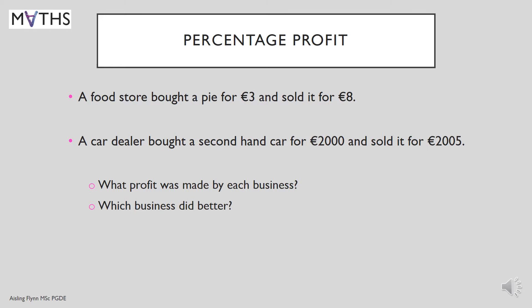I think you'd agree that the food store did better. Why? Because the profit is a bigger proportion in proportion to the cost price — €3. They made €5 on three, that's really good. Whereas to make €5 on 2,000, probably not so good.